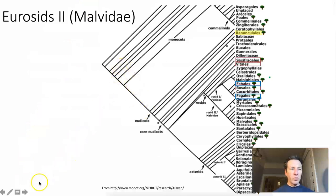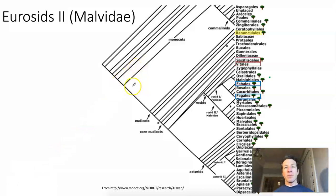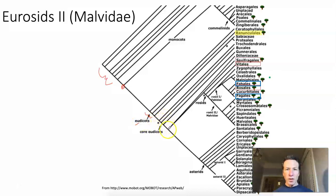Let's orient to where these groups are in an angiosperm phylogeny. We have those basal angiosperms that diverged before the split between monocots and dicots. Then we get the monocot-dicot split, and we've talked about some basal eudicots — those early diverging eudicot lineages.